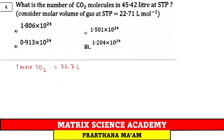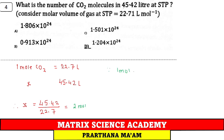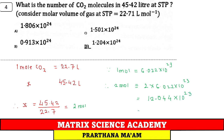Question 4: Find the number of CO₂ molecules in 45.42 L at new STP (molar volume = 22.7 L/mol). Moles = 45.42 / 22.7 = 2 mol. Molecules = 2 × 6.022 × 10²³ = 12.044 × 10²³ = 1.2044 × 10²⁴. Option D.